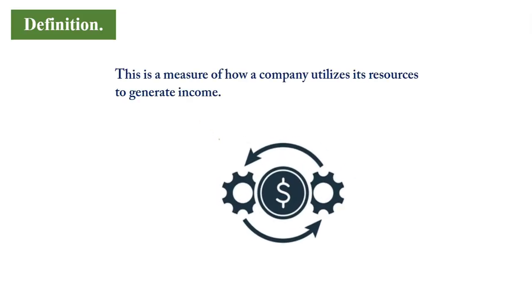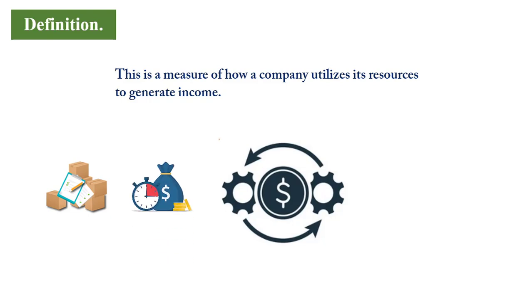Measuring efficiency: efficiency talks about how a company is able to turn around its short-term resources, that is the current assets, to generate income. Efficiency ratios look at various aspects of the company, such as the time it takes to buy inventory, sell it off especially to those who purchase on credit, and the time it will take to retrieve the money from their customers and add it to the cash already held.